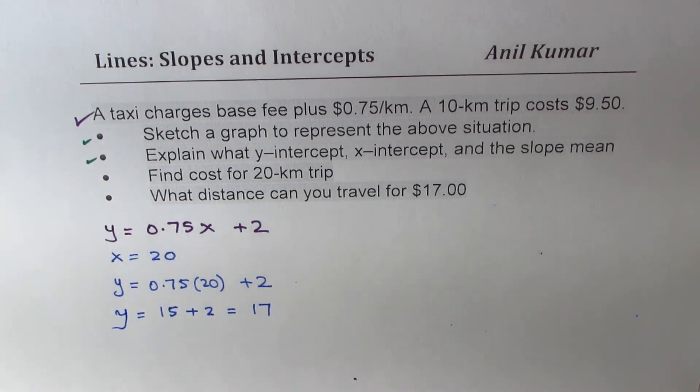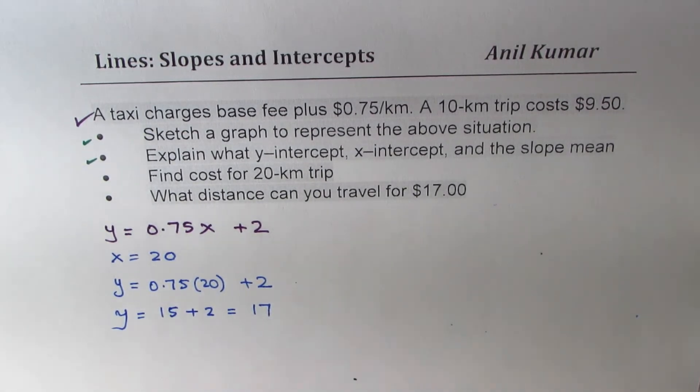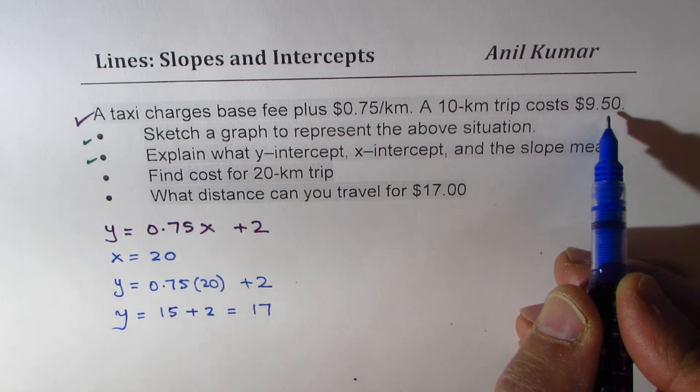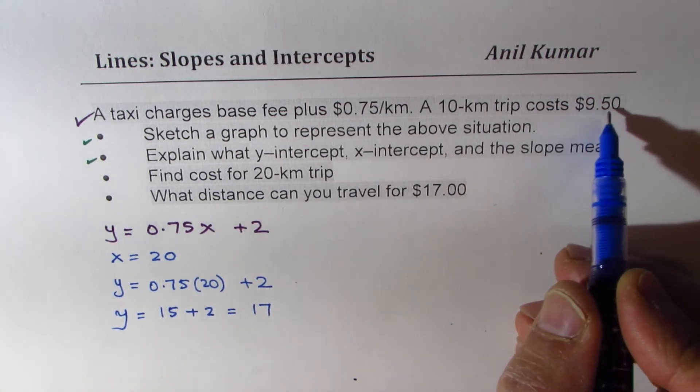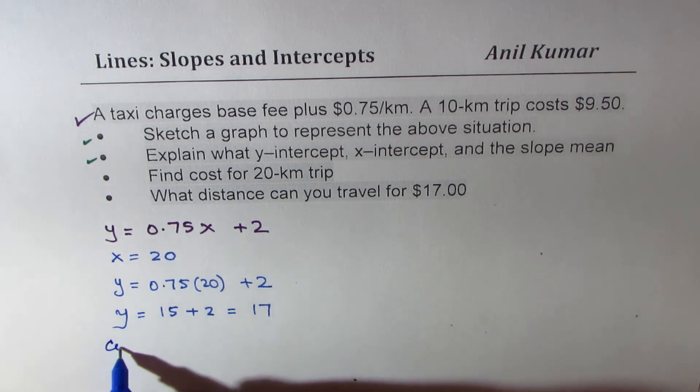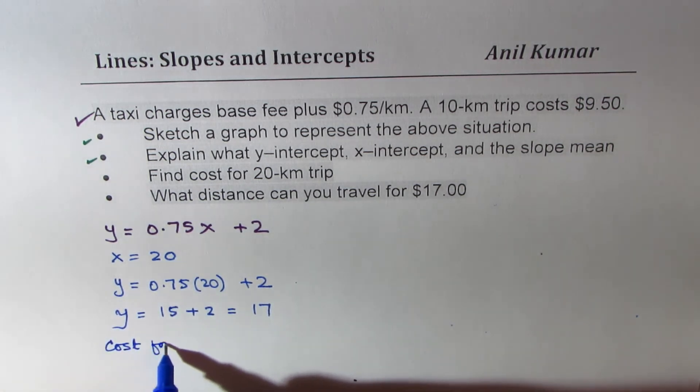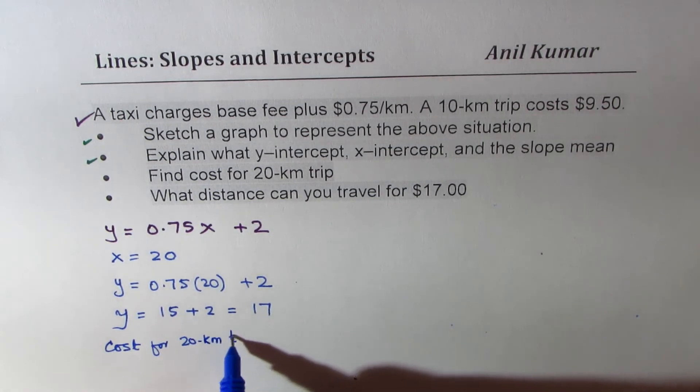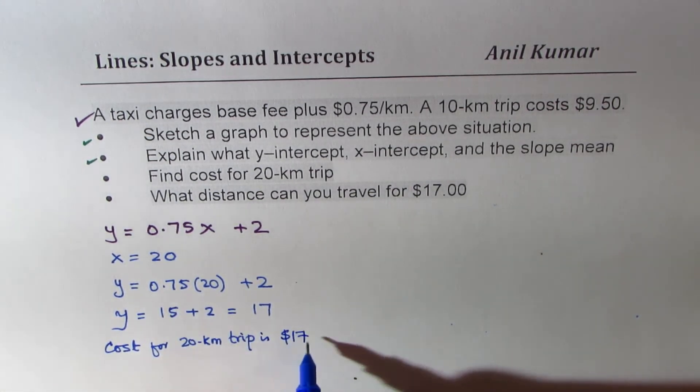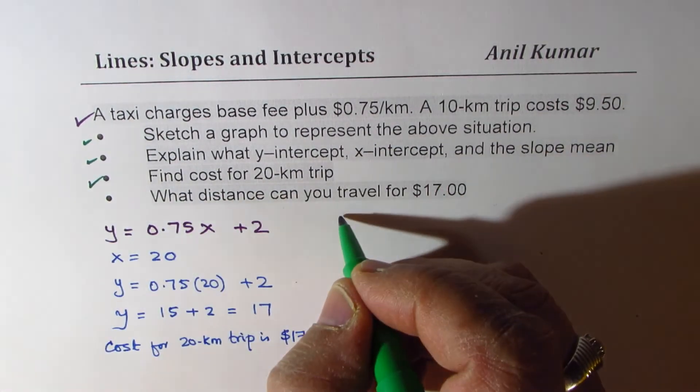So what you see here is that it is not really double of $9.50. It is $17. So the answer is cost for 20 kilometer trip is $17. So that is the first part of this question.